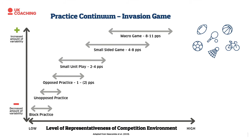Opposed practice covers 1v1 or 1v2 scenarios, focusing on technical elements like defending or dribbling and attacking 1v1. Moving into unopposed practice, there can be lots of technical repetition of a certain type of passing, but with variability included — decisions still to be made about which gap to pass through, which player to pass to, and distances and types of pass change. Right at the bottom is block practice, where we control many variables, keep the action the same, and repeat it — for example, a push pass over 15 metres on the forehand — limited variability but maximum repetitions of a certain action.